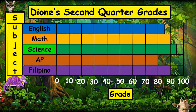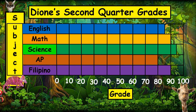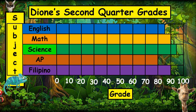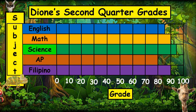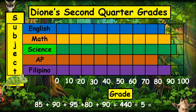We can say that Dion is good in Science, followed by Math and Filipino. He has to exert more effort in AP. To get the average, add the grades in each subject then divide by 5, since there are 5 subjects. Therefore, Dion's average grade is 88.